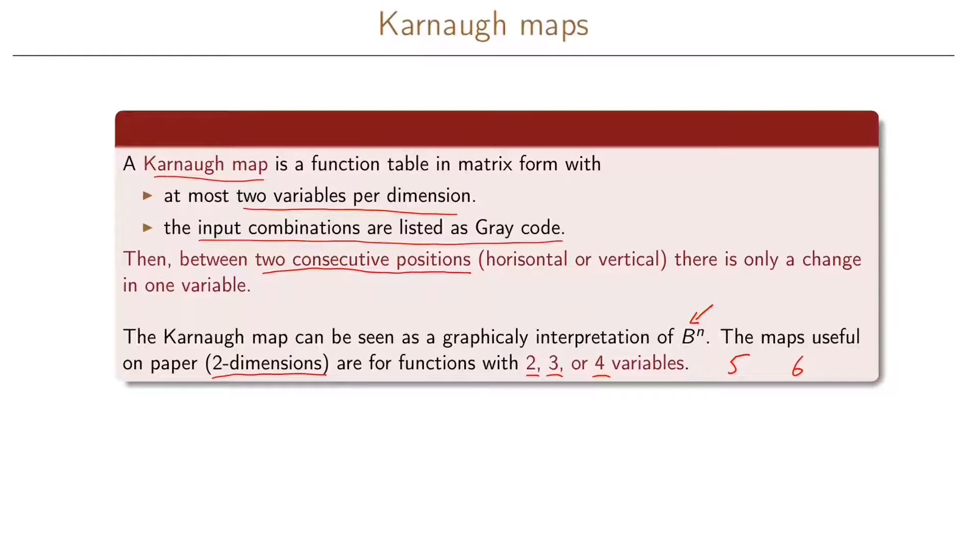And the reason that it is easy to do for two, three, or four variables is that a paper has these two dimensions. It is very easy to graphically write two dimensions on a piece of paper. And since we can have at most two variables per dimension, it means that we can do it up to four variables.